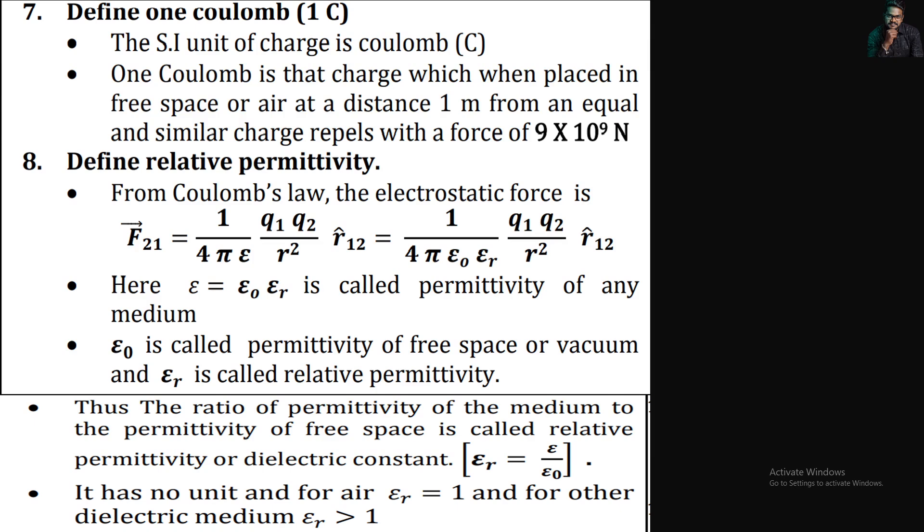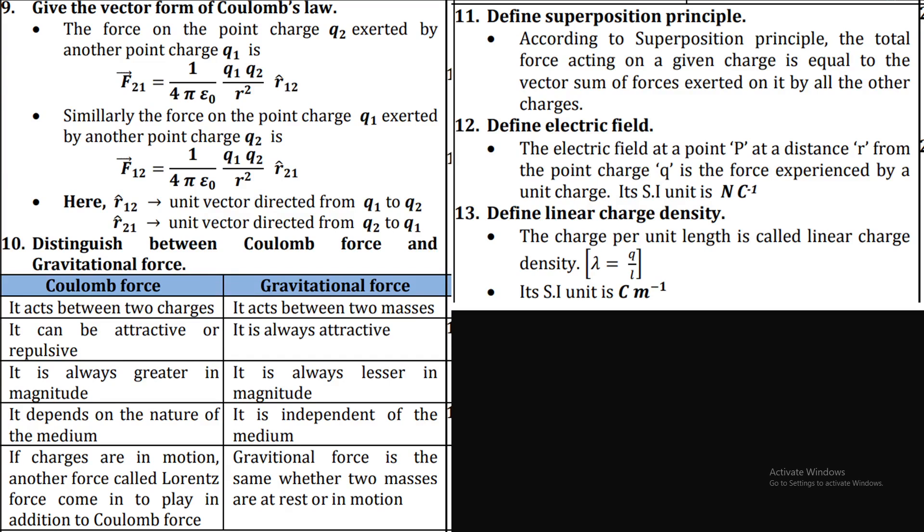Define one coulomb, define relative permittivity. We are doing the 2 mark and apart from that, give the vector form of Coulomb's law.